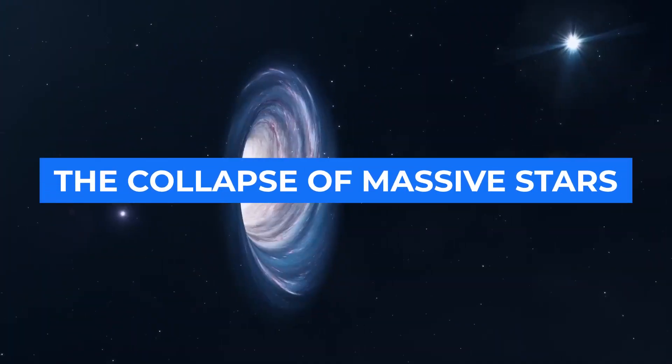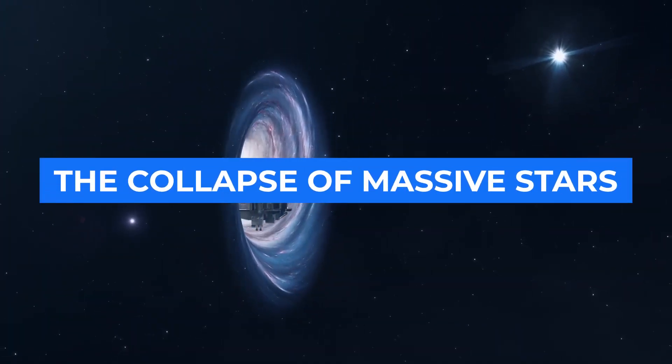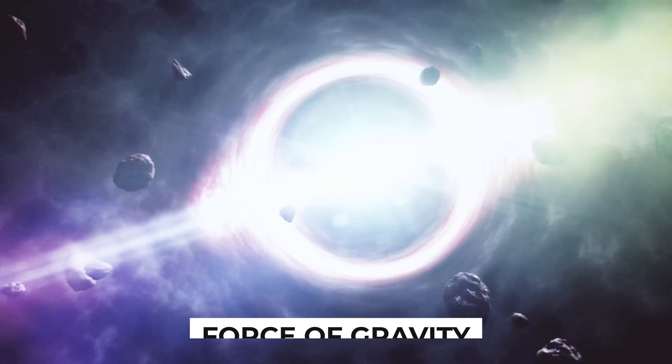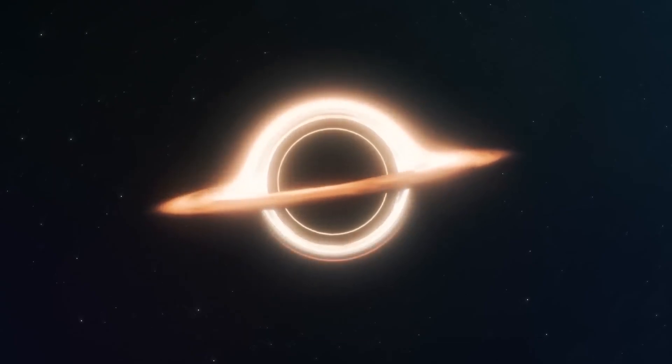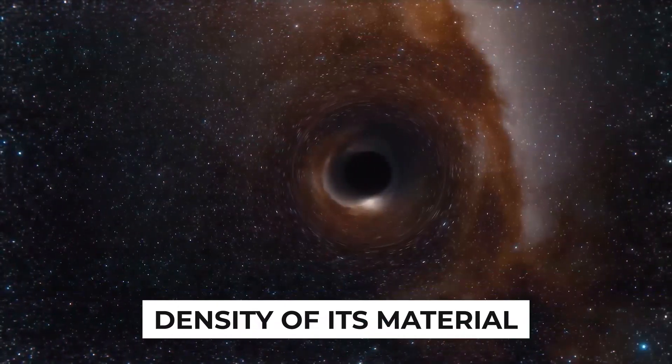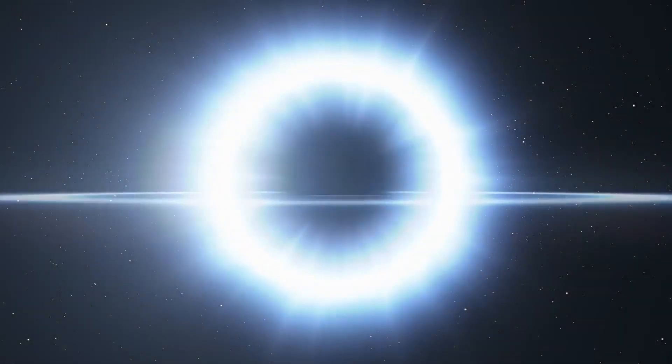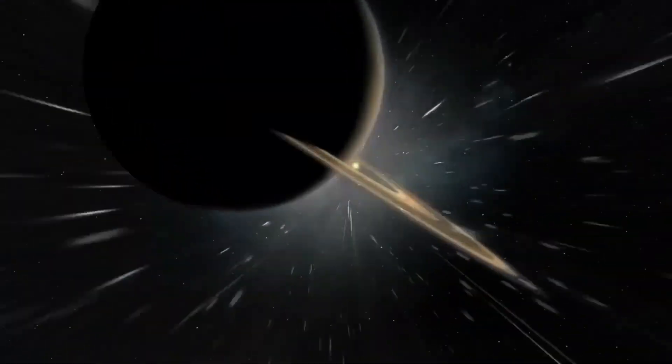There is matter in black holes, but it is compressed so densely that the force of gravity is greater than any other factor. A bowling ball's weight comes from the density of its material. Even more mass jammed into the same little area would provide gravity intense enough to bend light.